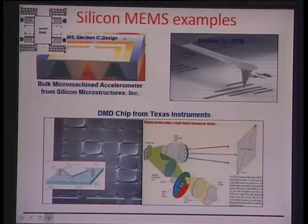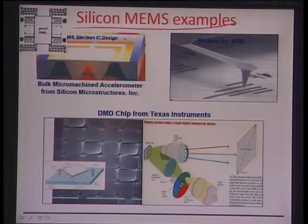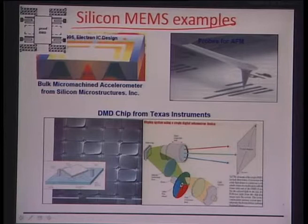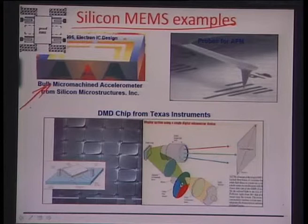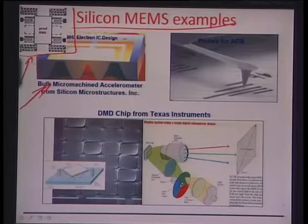Let us look at some applications and devices used in silicon MEMS, borrowed from industrial and commercial use. This figure is a bulk micro-machined accelerometer from silicon microstructures. The basic operating principle involves a vibrating proof mass on a micro-pivotal structure that can vibrate in multiple directions.